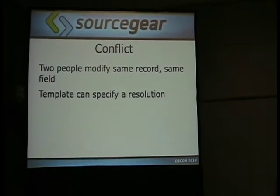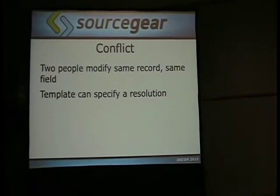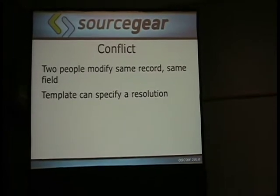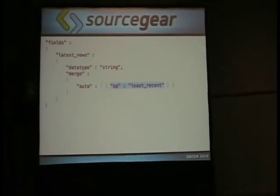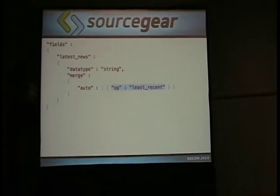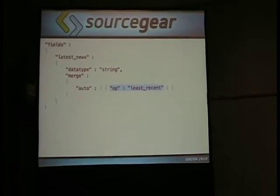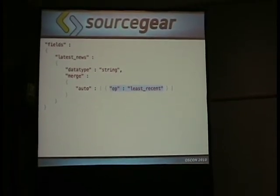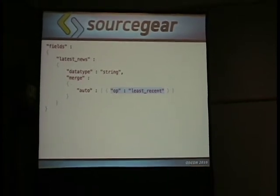A conflicting change is when two people modify the same record and the same field. This is where the template gets really helpful, because you can specify how you want these to be resolved. Here's a template that says: whatever happens, just take the most recent — the latest one. This is how Fossil works, so you can configure your template to work the same way.